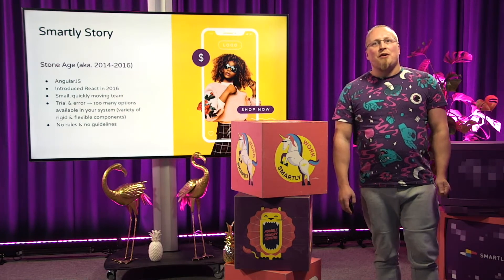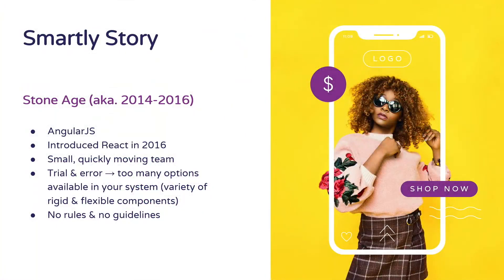When we started building the very first version of the Smartly app, we also landed somewhere on that spectrum. As we had a very small team and we wanted to move fast, we just picked components from here and there, ending up with all sorts of components. Even more so when we started to switch from Angular to React — we didn't directly migrate all the components, but just rewrote those as we needed. And even today, some of the Angular components are still in the application, and you can recognize those from the different styles they have.